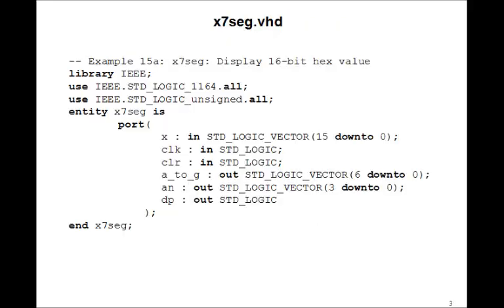All right, let's write the VHDL program then. Our X7SEG is going to have a 16-bit input X for the 4 hex digits. It's going to have a clock and a clear, that's going to be for our little counter, then our usual A to G out, our enable out, 4 bits, and our decimal point out.